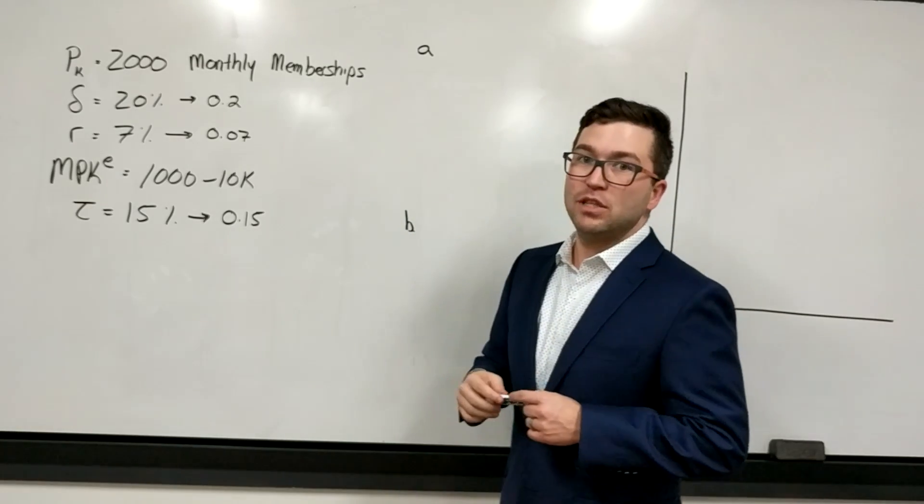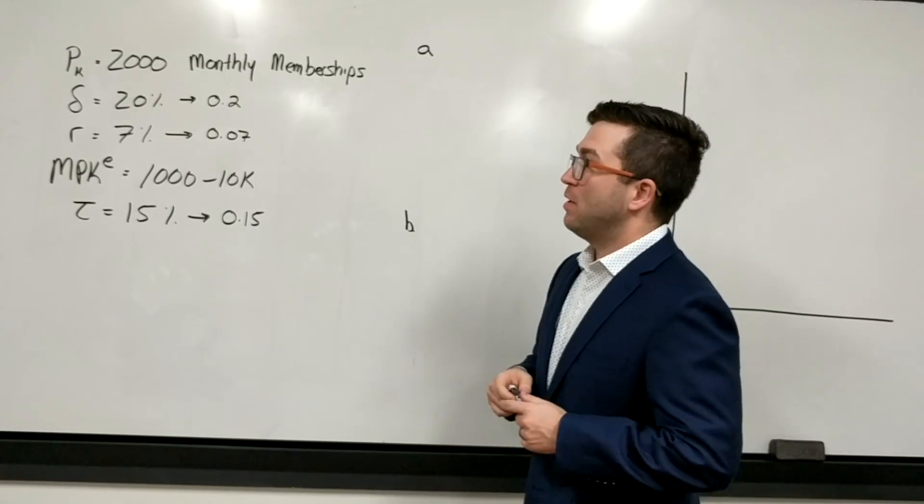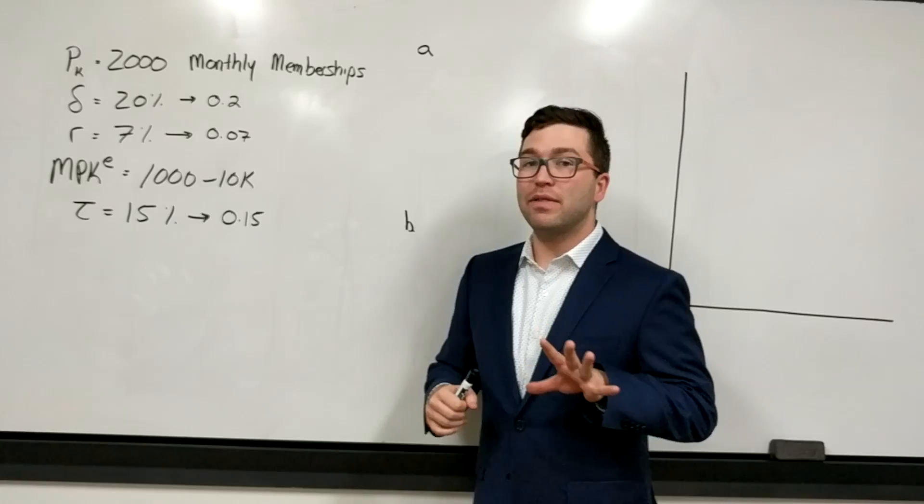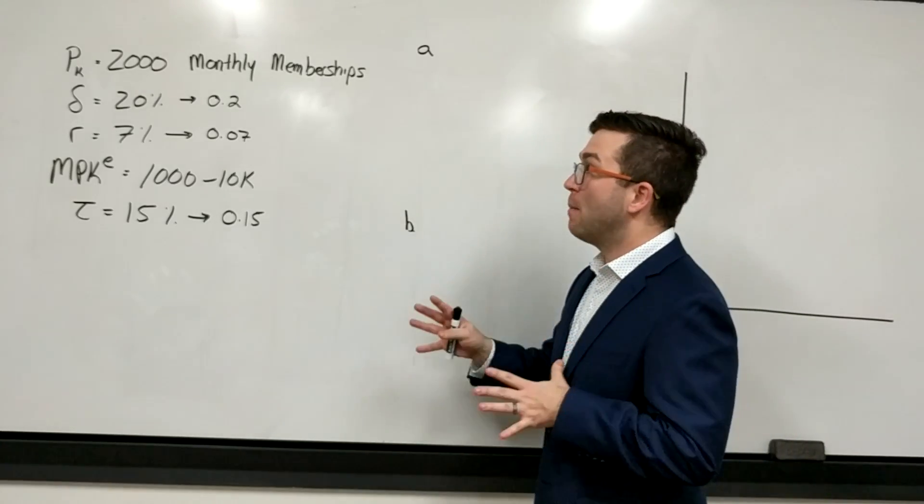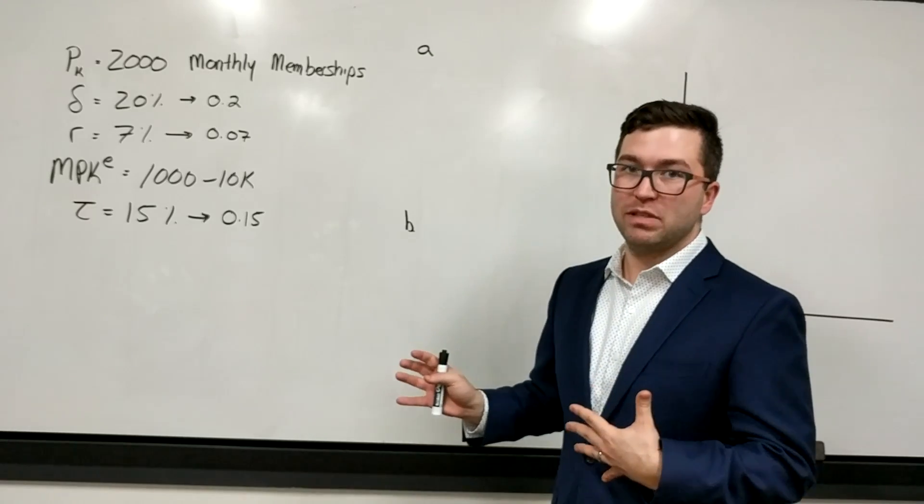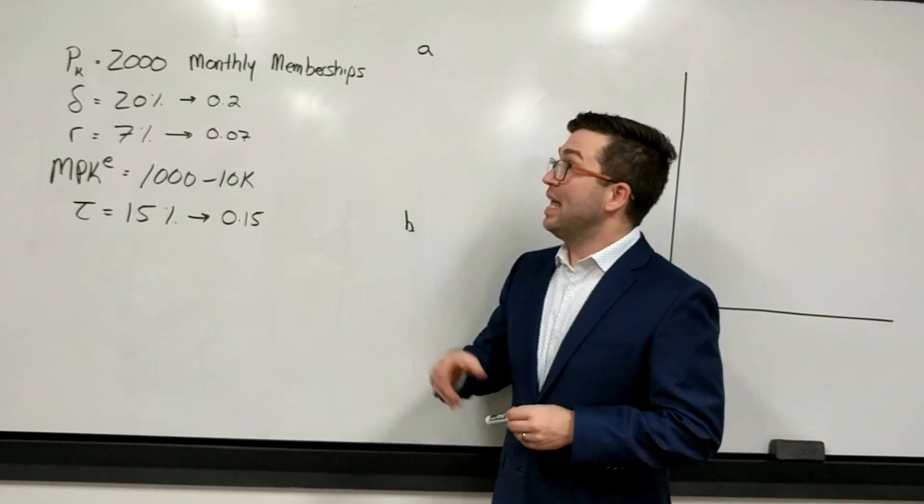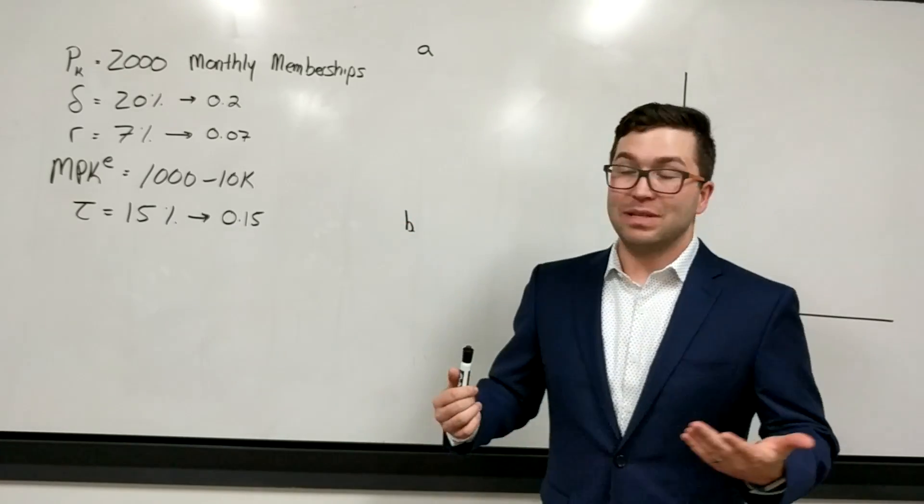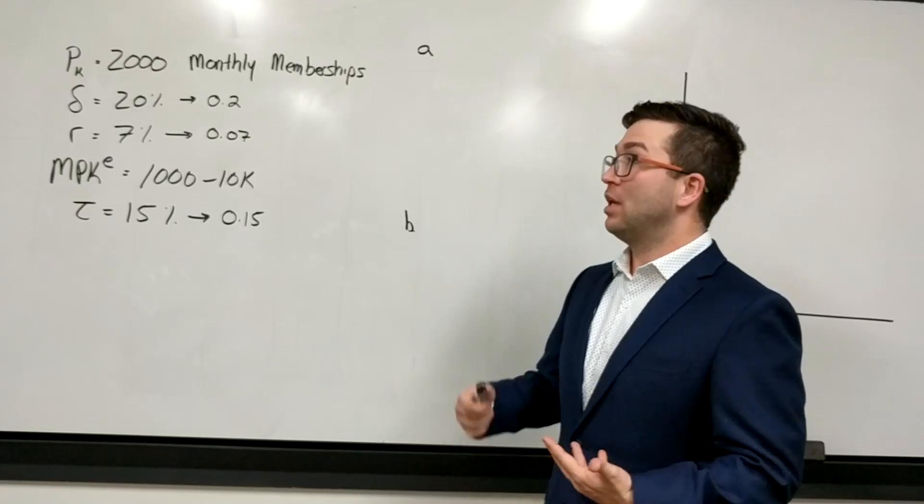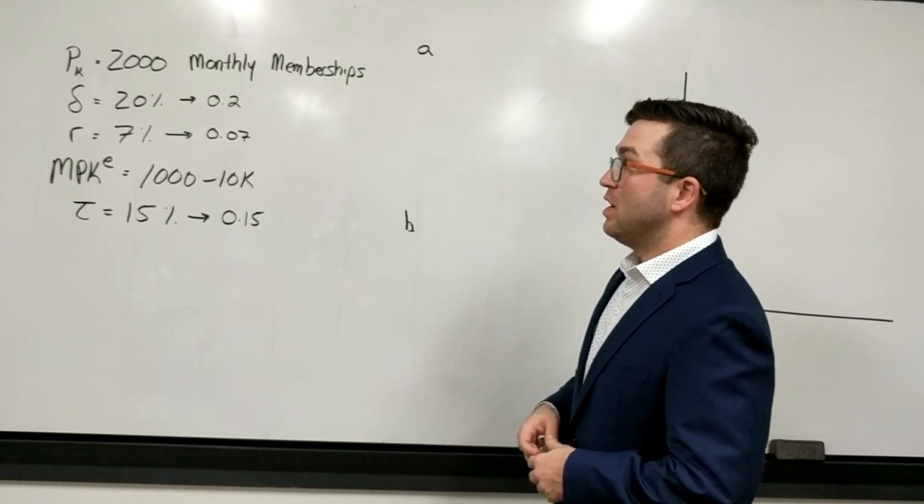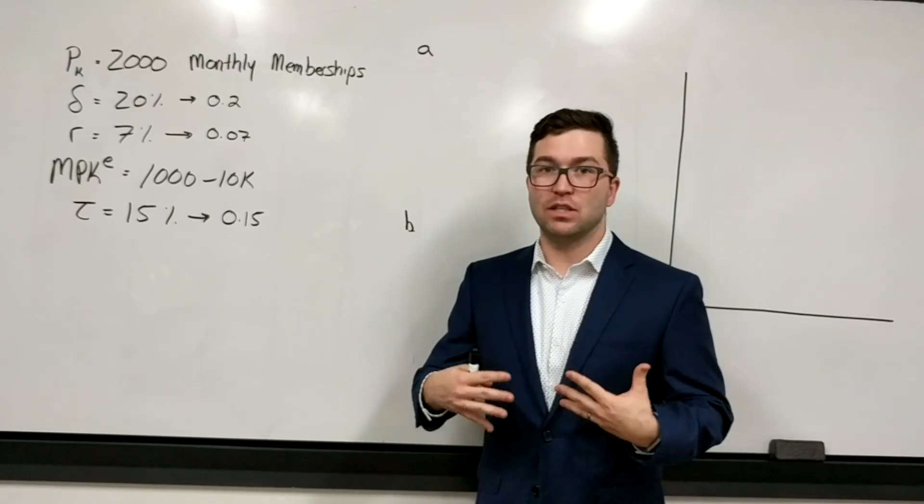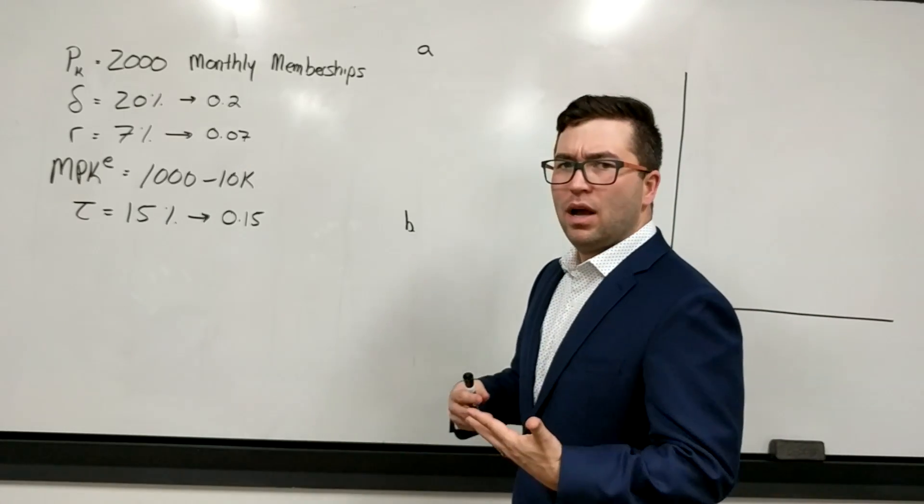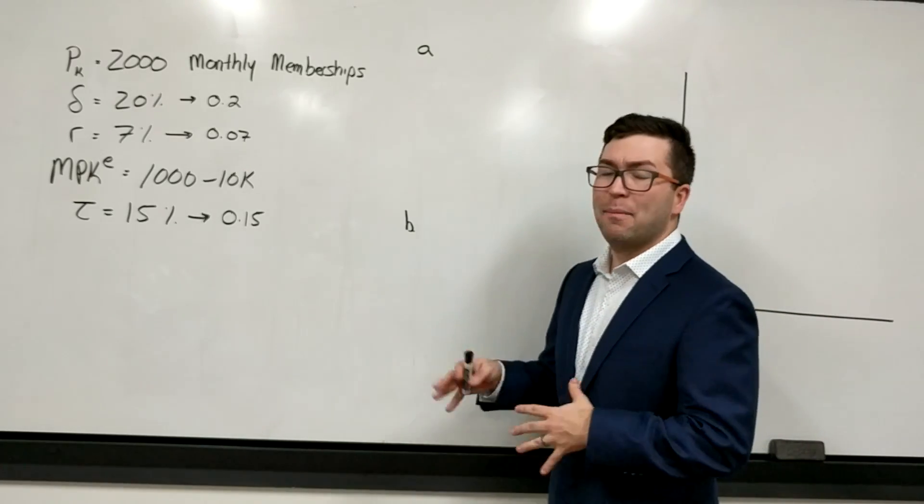So let's start by looking at the information that's given to us. We have the price of capital, which is PK, that is going to be 2,000 monthly memberships. See how this is a real term, meaning that it's going to be expressed in the number of monthly memberships, not necessarily a price. So if the monthly memberships was ten dollars, then the price of capital in this case would be twenty thousand dollars, but we care about just how many monthly memberships this is going to be.